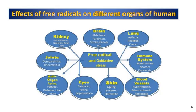Free radicals have effects on many parts of the human body, causing several diseases. In the brain, they cause Alzheimer's, brain cancer, and stroke. In the lung, they cause asthma, allergies, and cancer. In the blood vessels, they cause hypertension. In the skin, they cause aging, sunburn, and dermatitis. They also cause many kidney diseases, neuritis, diabetes, fatigue, and liver injury.